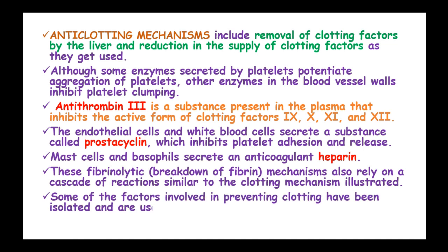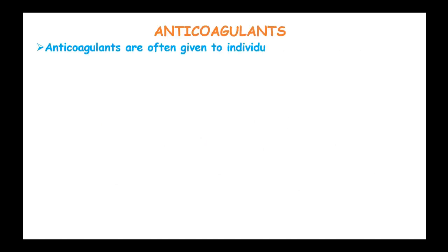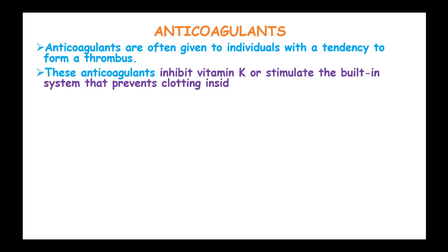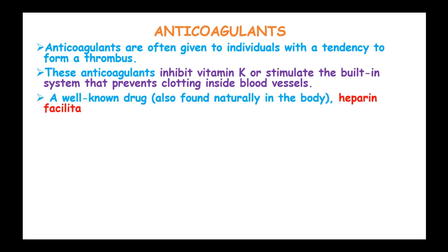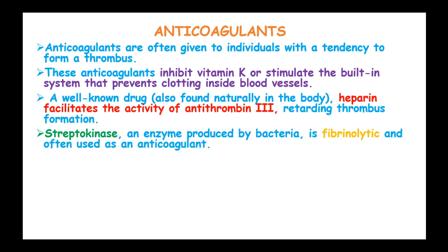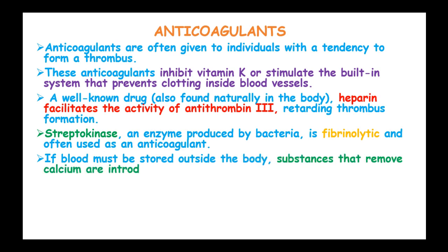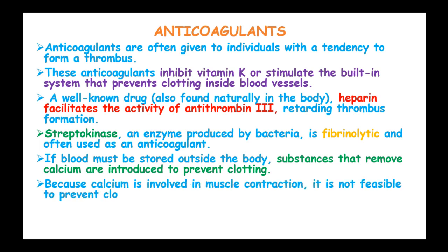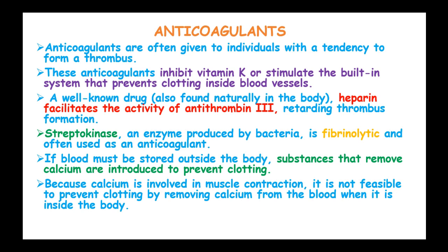Some of the factors involved in preventing clotting have been isolated and are used to treat patients with myocardial infarction. Anticoagulants are often given to individuals with a tendency to form thrombus. These anticoagulants inhibit vitamin K and stabilize the built-in system which prevents clotting inside the blood vessels. A well-known drug is heparin, which activates the activity of antithrombin-3, retarding thrombus formation. Streptokinase, an enzyme produced by bacteria, is fibrinolytic and used as an anticoagulant. If blood must be stored outside the body, substances which remove calcium are introduced to prevent clotting, since calcium is involved in muscle contraction and it is not feasible to remove calcium from blood inside the body.